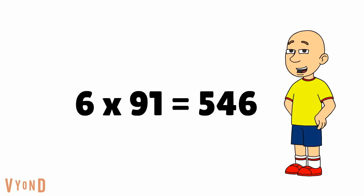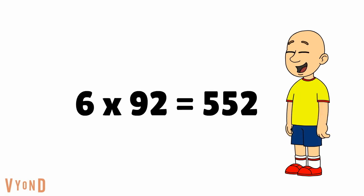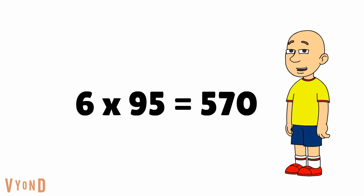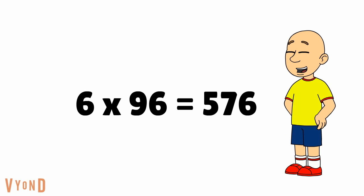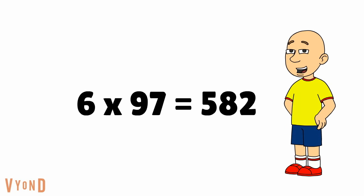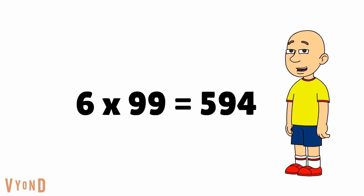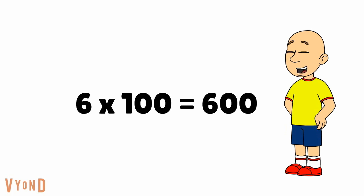6 times 91 equals 546. 6 times 92 equals 552. 6 times 93 equals 558. 6 times 94 equals 564. 6 times 95 equals 570. 6 times 96 equals 576. 6 times 97 equals 582. 6 times 98 equals 588. 6 times 99 equals 594. And 6 times 100 equals 600.